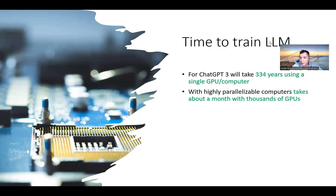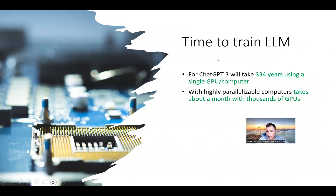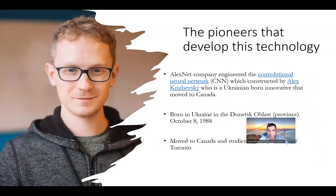For the time to train the LLM — the large language model — ChatGPT-3 would take 334 years using a single GPU. But because computational power is available now, in split seconds you can get answers. With highly parallelized computers, it becomes much easier and faster.